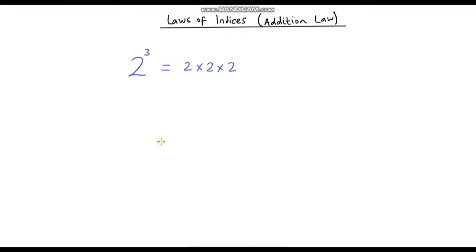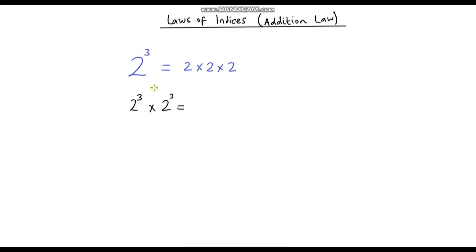Hello and welcome to the first video in a series on laws of indices. Just a reminder that when we have something like 2 to the power 3, that does not mean 2 times 3 — it means 2 times 2 times 2. We're multiplying 2 by itself three times.